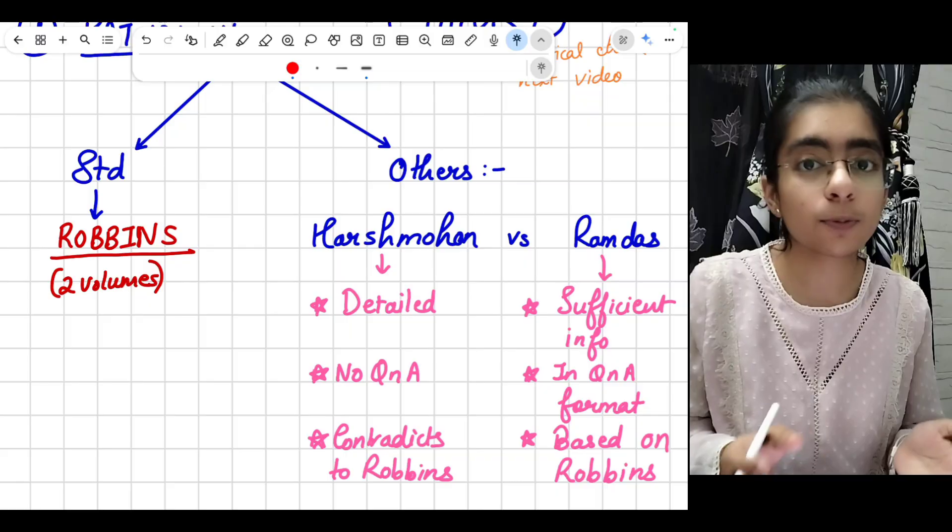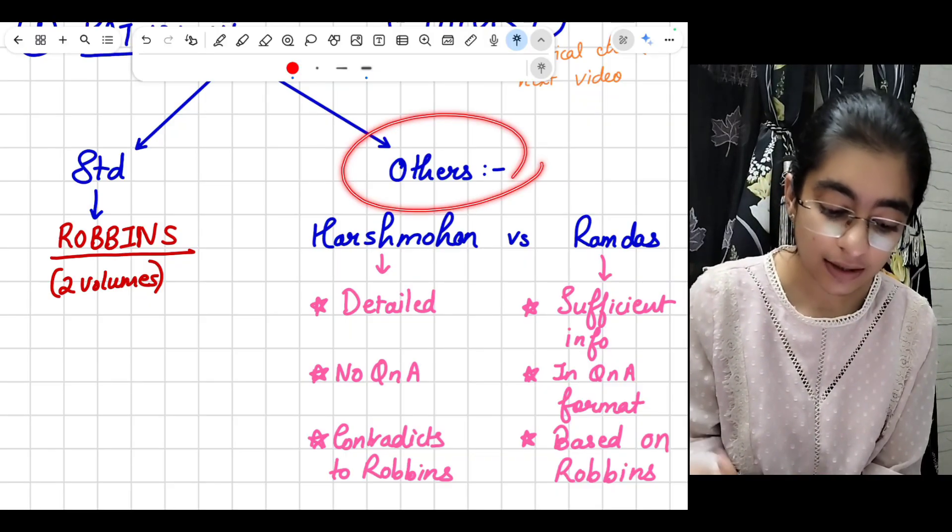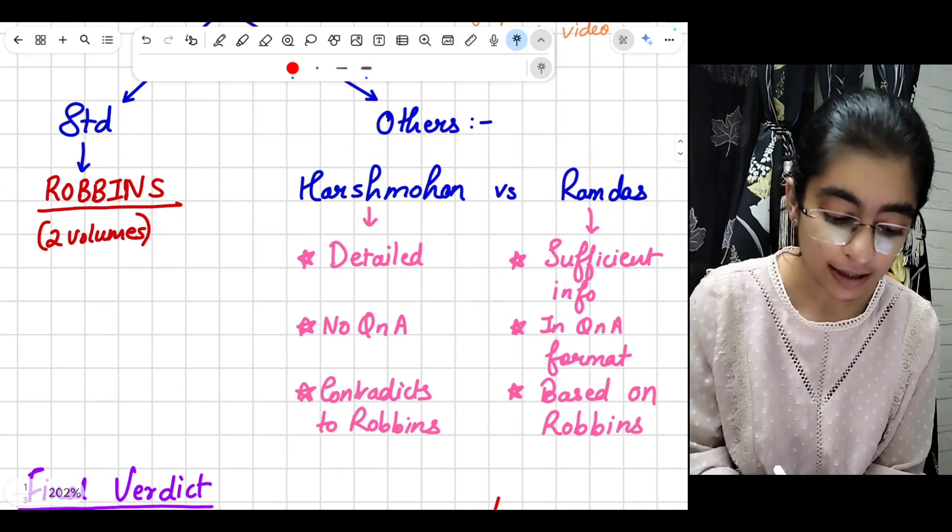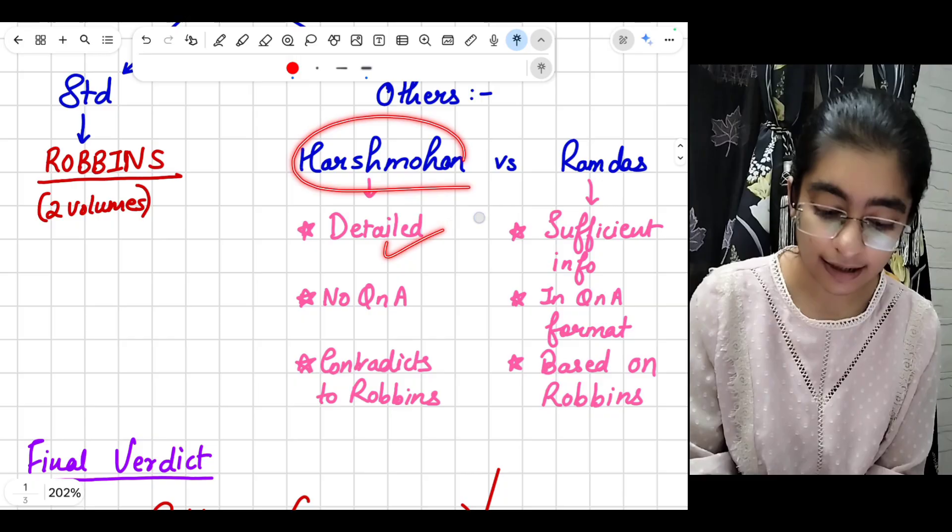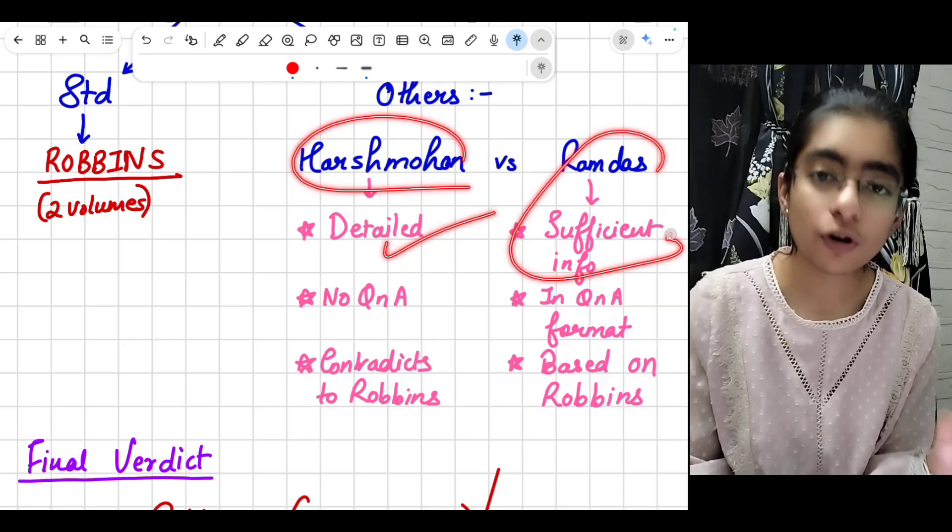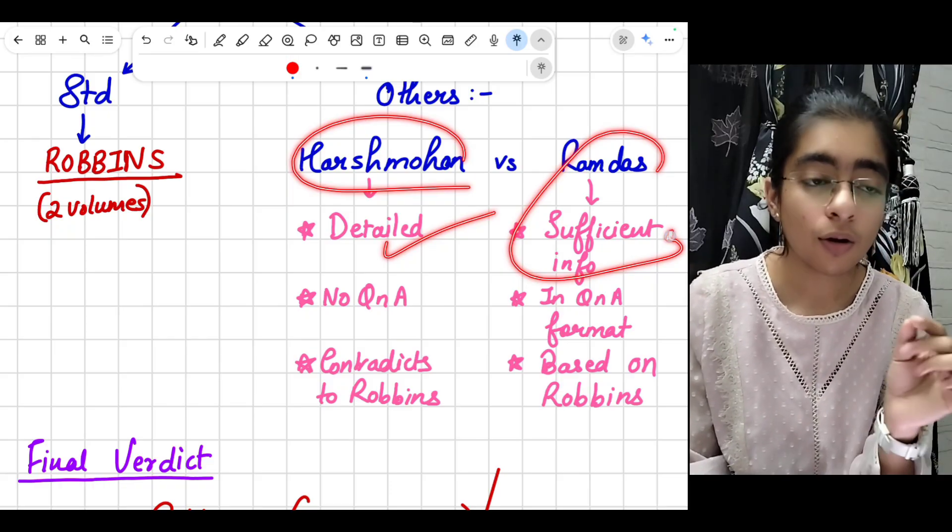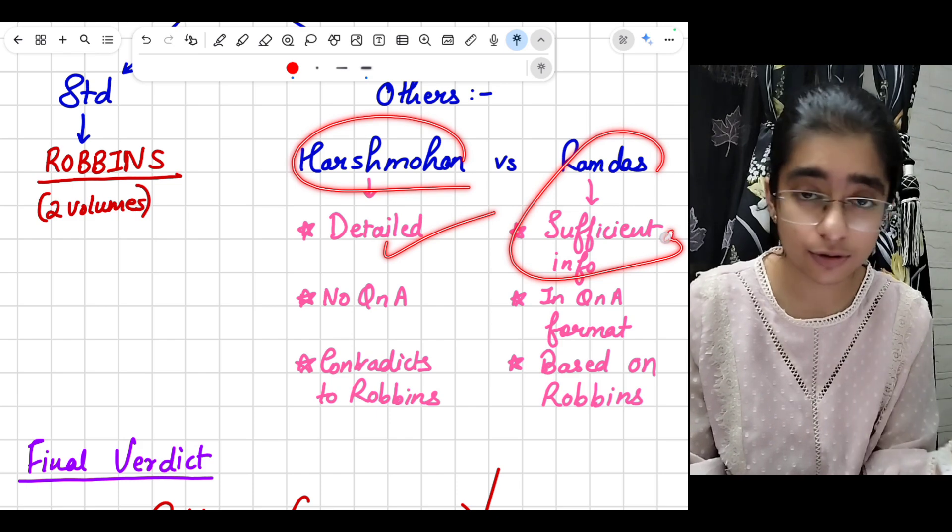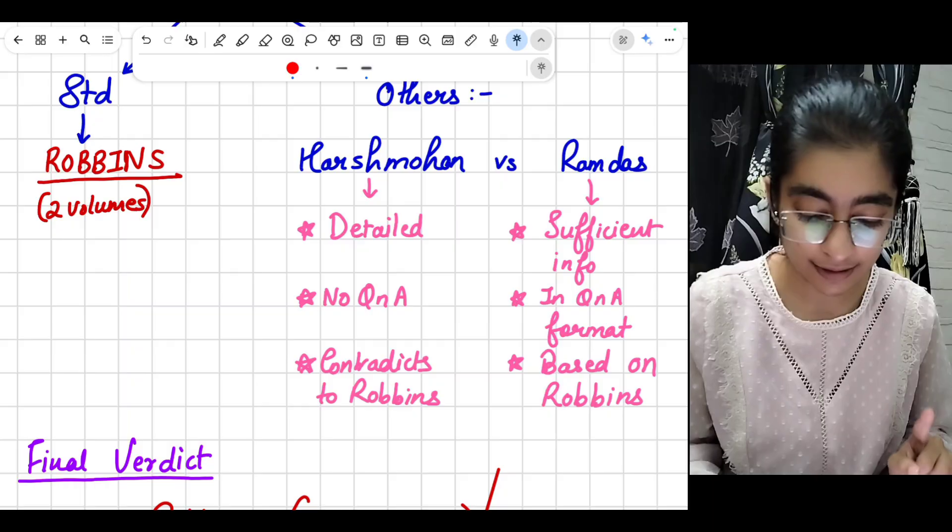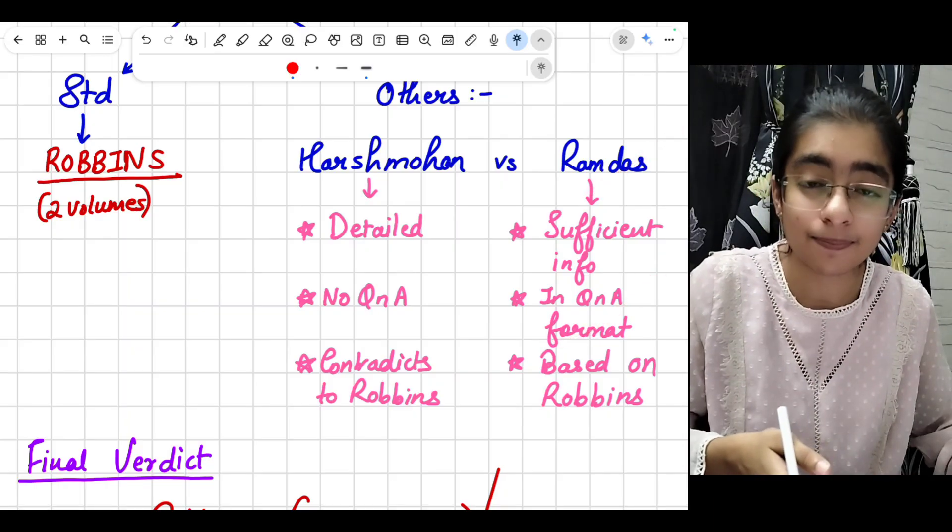Next is others, like we are having the Harshmohan and Ramdas Naik of Indian authors. Harshmohan is detailed and Ramdas has just sufficient information for giving the exams. I am not saying you will just pass and not get a distinction with Ramdas Naik. But the thing is Harshmohan has no question and answer format and Ramdas has that question and answer format which actually comes in exam.